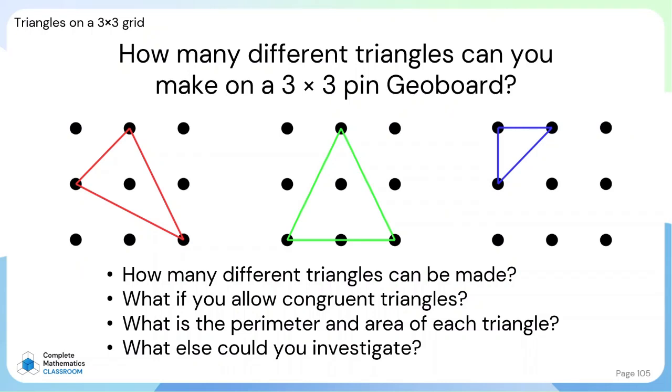How many different triangles can you make on a 3x3 pin geoboard? How many different triangles can be made? What if you allow congruent triangles? What's the perimeter and area of each triangle? And what other questions could you investigate?